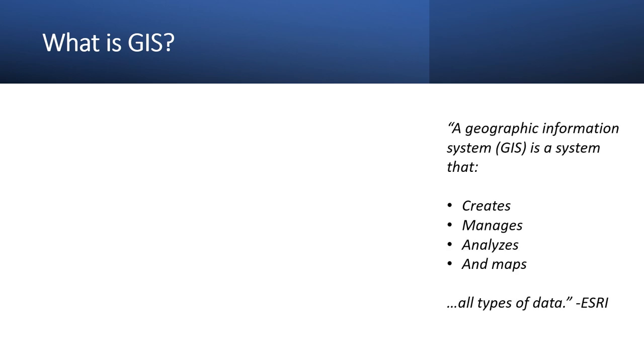A geographic information system is a system that creates, manages, analyzes, and maps all types of data. You're utilizing GIS on a daily basis. Like how I explained to my mother what I do for a living — I basically do Google Maps, just on the water and wastewater side. That layman's description helps her out a lot.